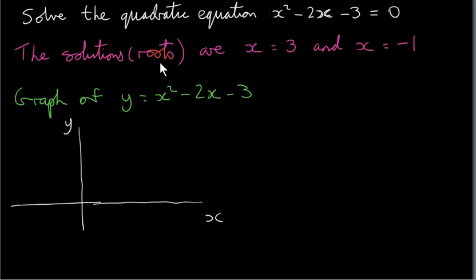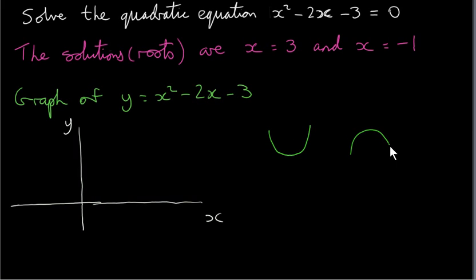Now, where are the solutions, or the roots, on a graph of this quadratic expression? We put y equal to this quadratic expression and draw a graph of it. The graph of a quadratic expression is a parabola — a u-shape — either upright or inverted depending on the sign of the x squared term. Since the x squared term is positive, the parabola is upright, and it will cross the x-axis at the roots, at 3 and at minus 1.